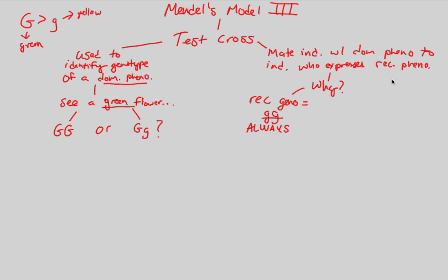You can only have a recessive phenotype — a yellow flower — if you have two recessive alleles being expressed. The recessive genotype is always lowercase g lowercase g. The recessive phenotype is always yellow. These are facts that you absolutely know. So why not extrapolate on these facts? Why not deduce information based off of this? Let's actually do the cross now.